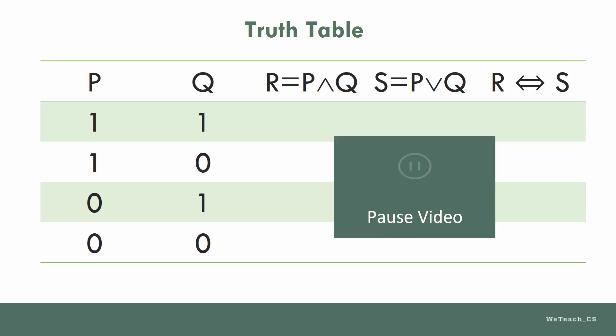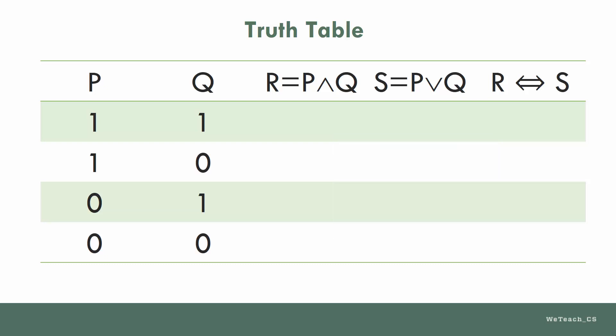Now let's work through each column. The R column will represent the conjunction P and Q, and as you learned in a previous lesson, in order for AND to be true, both parts must be true. The only line that fits this requirement is the first one, where P and Q are both true, and so you mark a 1 in the box for true. The remaining three combinations are all false, since at least one of the values is false, making the entire expression false.